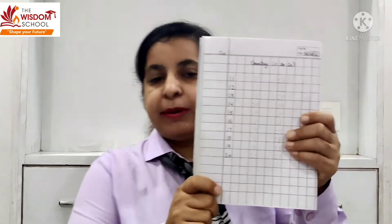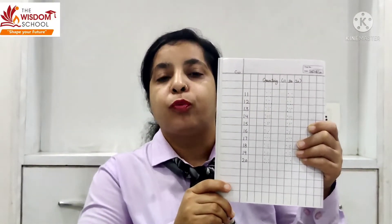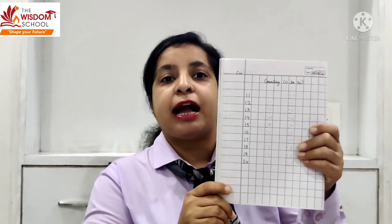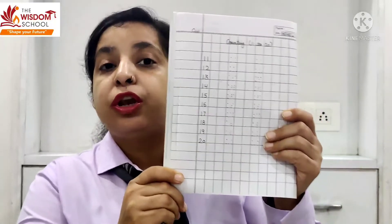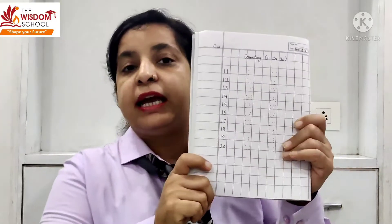Today we will do 11 to 20 counting in our maths notebook. देखो बच्चा, 1 to 10 की हमारी बहुत बार revision हो गई — बुक में भी और notebook में भी। तो आज हम 11 to 20 counting अपनी maths की notebook में करेंगे। जैसे बोलते हैं न — 1 1 eleven, 1 2 twelve, 1 3 thirteen — बिल्कुल वैसे ही करना है।